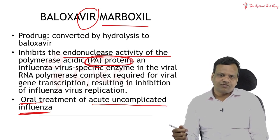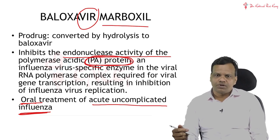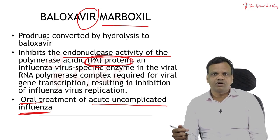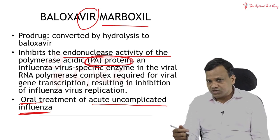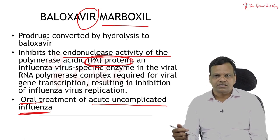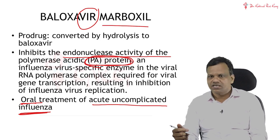It is used for oral treatment of acute uncomplicated influenza viruses like bird flu and swine flu. The drug of choice for bird flu and swine flu is Oseltamivir — that group of drugs are neuraminidase inhibitors — whereas Beloxavir is inhibiting the RNA polymerase.